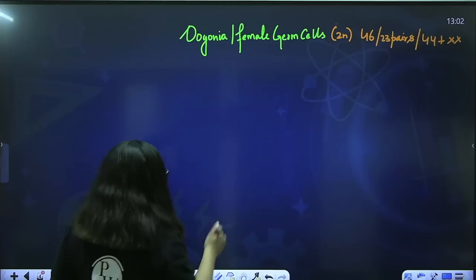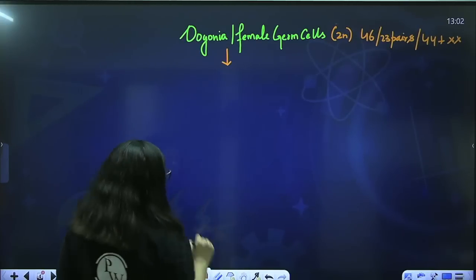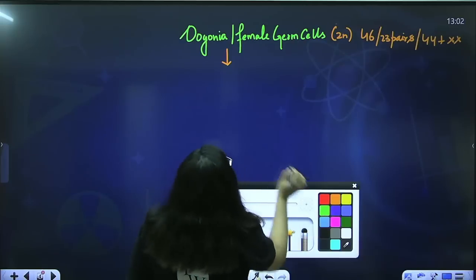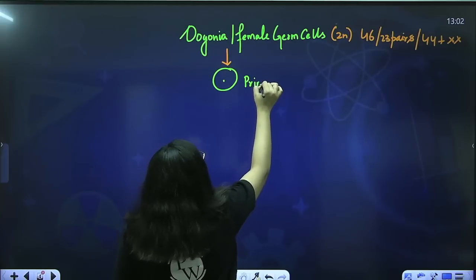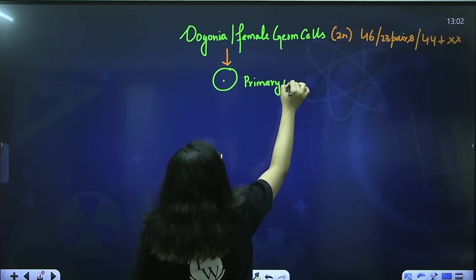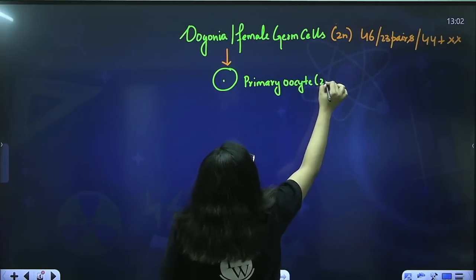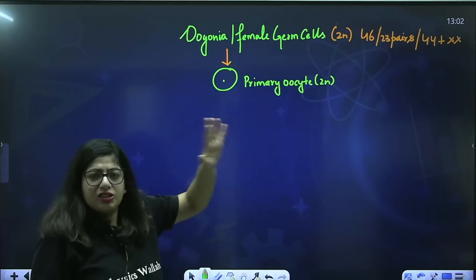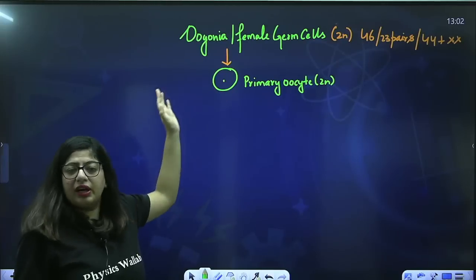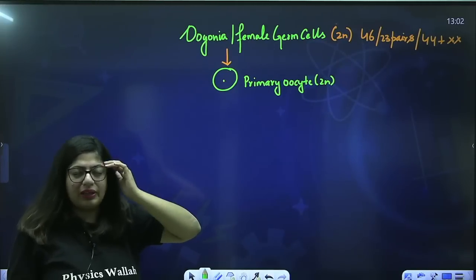This oogonium will undergo maturation or differentiation and form a cell known as the primary oocyte, which is also diploid. Just like in males we have spermatogonia and then primary spermatocyte, the same pattern is happening here.